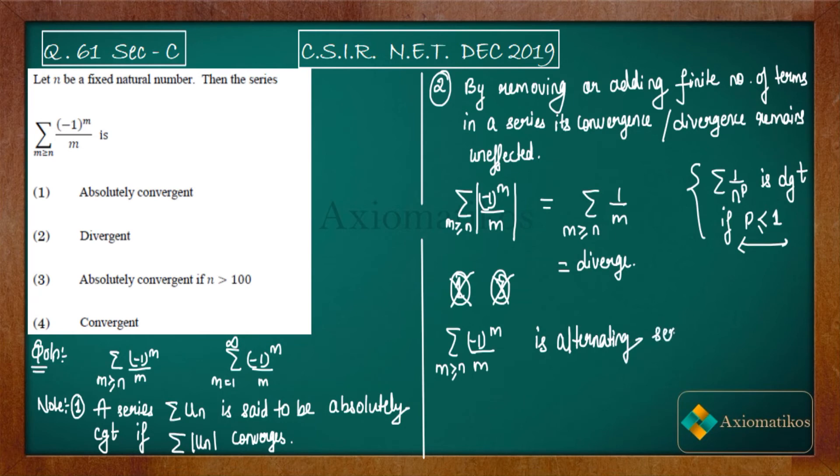It's an alternating series, and we know that for an alternating series we have a test called Leibniz's test. Leibniz's test tells you that if you have a series like ∑(-1)^n a_n where a_n > 0, a_n should be positive or equal to zero.